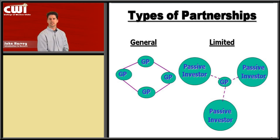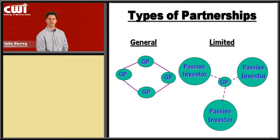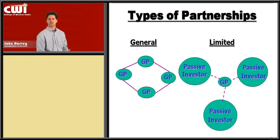In a limited partnership, you may have somebody who wants to be a passive investor. They may have money they're willing to fund your activities, but they don't want to actually work in the business day to day or make decisions on inventory or services. They're just being the money person — they provide funds and may check in occasionally. You're still a general partner if you're the one running the business, but the passive investor is what changes the dynamic from a general partnership to a limited partnership.